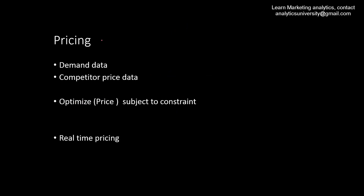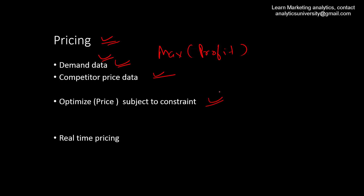Pricing is one area where you can use data analytics for product pricing in the retail industry. You have demand data — how much demand exists for a given product or category — and you also have competitors' price data, which is mostly available nowadays from market research companies and various forums. You use the demand data along with the competitor's price to determine pricing that maximizes profit.